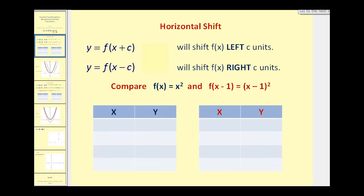Let's first talk about a horizontal shift, which means the graph will be shifted left or right. Y equals F of the quantity X plus C will shift F of X left C units, and Y equals F of the quantity X minus C will shift F of X right C units. Now this may be the opposite of what you might think — if you add C units to X, the function shifts left, and if you subtract C units from X, the shift will be right.